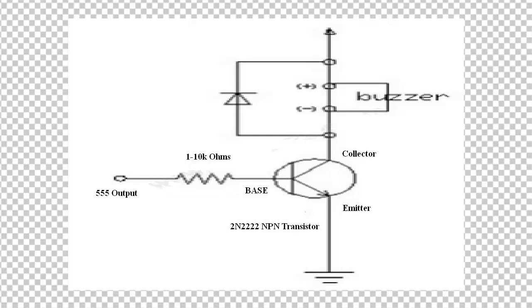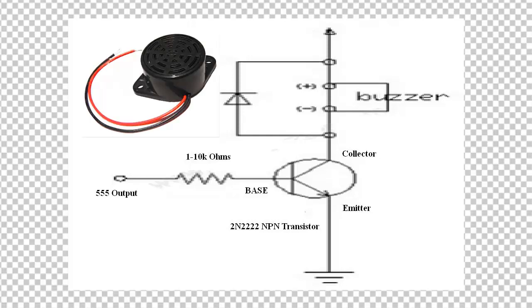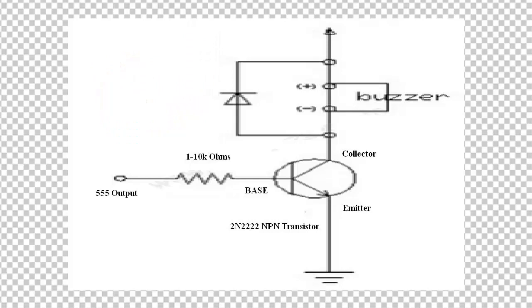So if you use the black wire, you can connect to the red wire. If you use the feedback, you can connect the buzzer. So if you use the buzzer, you can use it to produce an electric sound.